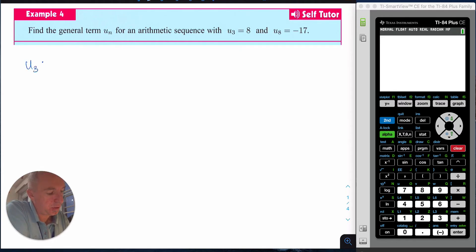First, you take u3 where n equals 3. You use the formula un = u1 + d(n-1) and substitute. We know that u3 is 8, so 8 = u1 + d(3-1). Writing d on the other side, we get 8 = u1 + 2d.